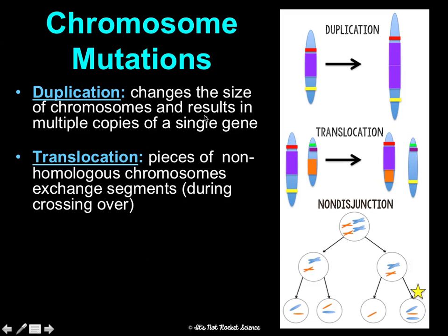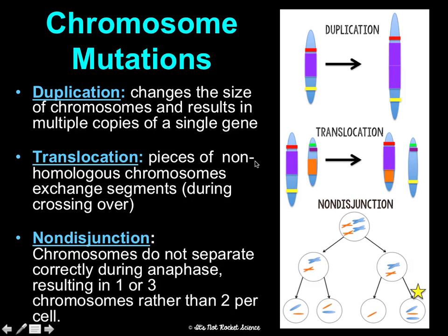Translocation is when non-homologous chromosomes exchange segments during crossing over — so two chromosomes that are not the same swap pieces and it's all jumbled together. And then non-disjunction is when chromosomes don't separate correctly during anaphase, and you end up with one or three chromosomes rather than the expected two per cell.